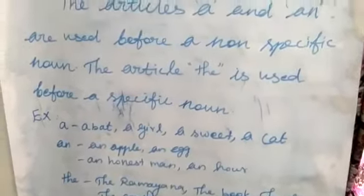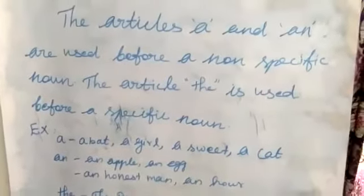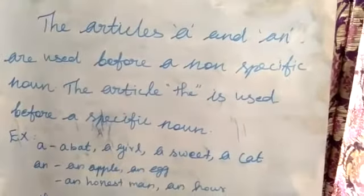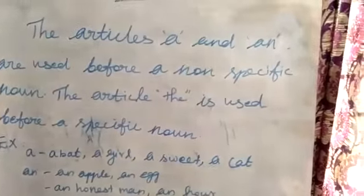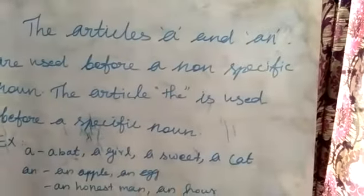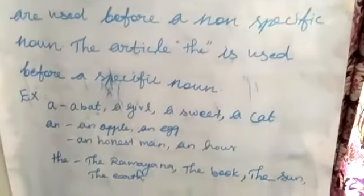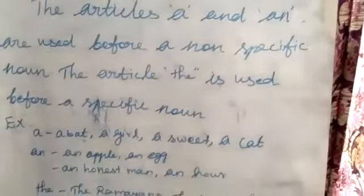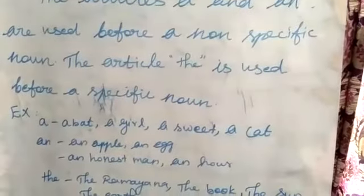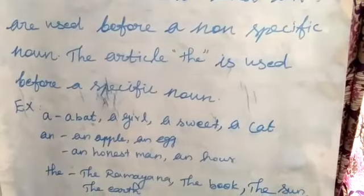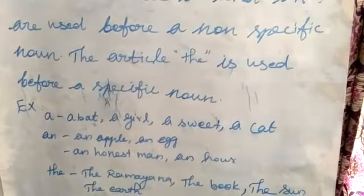One more time I repeat: A is used before the nouns beginning with consonants. Then, the article an. An is used before the nouns beginning with vowels.